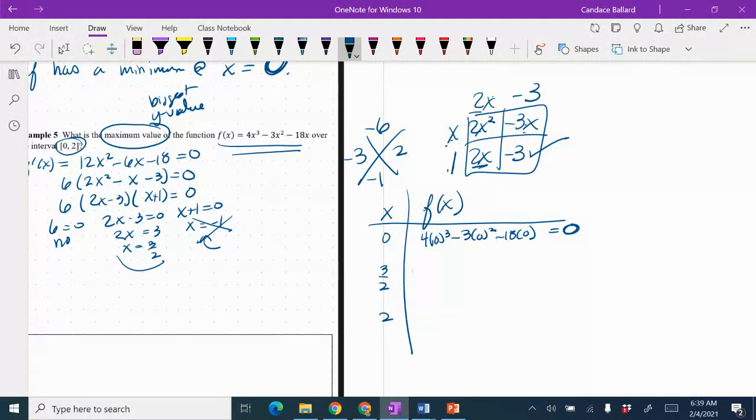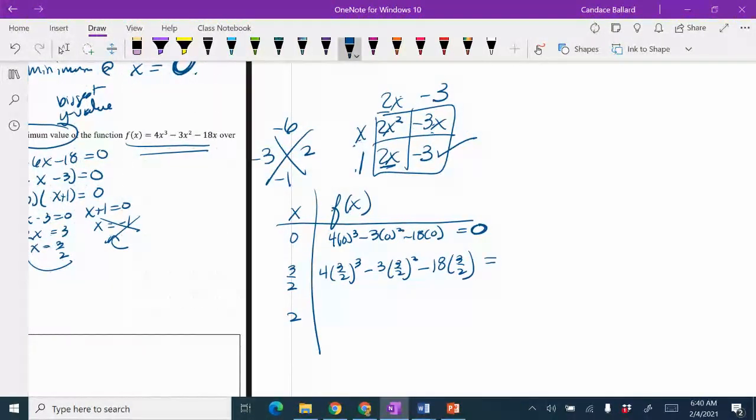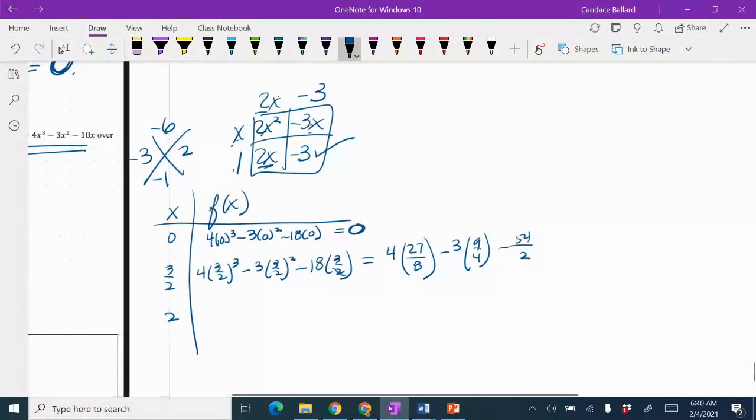Then I'm going to plug in the 3 halves. So 4 times 3 halves cubed minus 3 times 3 halves squared minus 18 times 3 halves. Okay, so this is going to give me, and I know this is going a little bit out and stretching out here. So we've got 4 times 3 cubed is 27. 2 cubed is 8 minus 3 times 9 fourths minus, let's say, 2 goes into... Actually, I'm not going to do that. I'm going to go ahead and multiply it up. 3 times 18 is negative 54 halves. I'm doing that on purpose, and I'm going to keep going to the right.